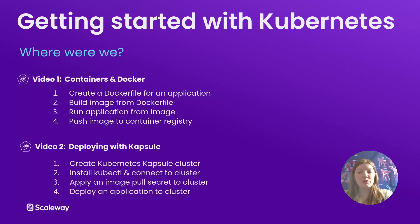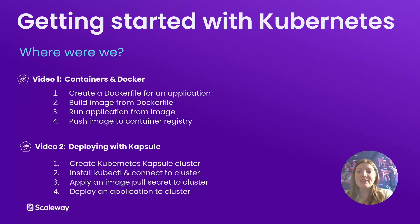The second video was all about deploying that containerized application from the first video with Kubernetes. We reviewed all the basic Kubernetes concepts before creating a Scaleway Kubernetes Kapsul cluster. We installed kubectl on our local machine so that we could connect to the cluster. We gave it an image pull secret so that it could pull our application image from the container registry. And finally, we deployed our containerized application to the cluster.